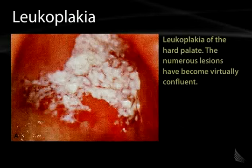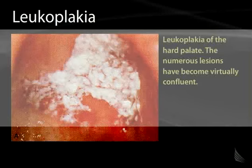This slide shows an example of leukoplakia. We're looking up at the hard palate of an affected individual, where what started as a series of discrete lesions that could not be readily scraped from the hard palate have now become a confluent mass of white matted material firmly adherent to the roof of the mouth.